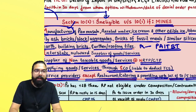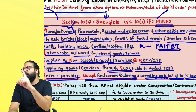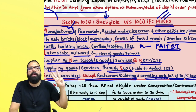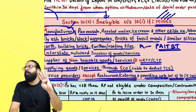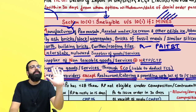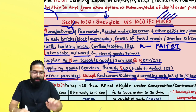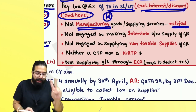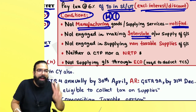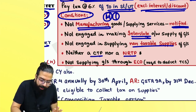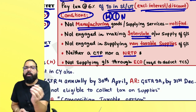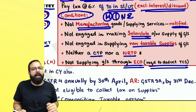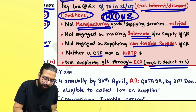Who is ineligible under Section 10(2A)? The same MINES apply — except S. The conditions are: you should not be a manufacturer of notified goods (M); I for interstate outward supplier; N for non-taxable goods supplier or NRTP or CTP; E for person supplying through e-commerce where TCS is deducted. Under 10(2A), service providers are primarily the target of this scheme, so only MINE are ineligible — not S.